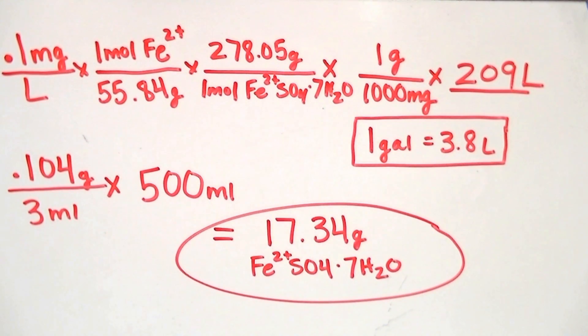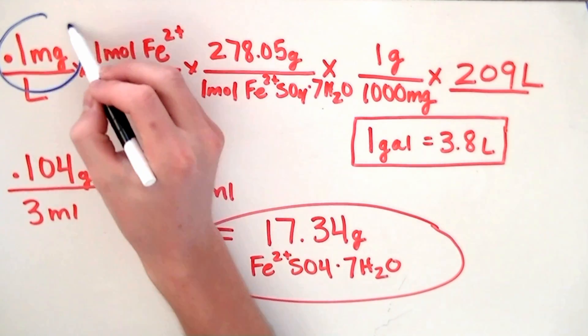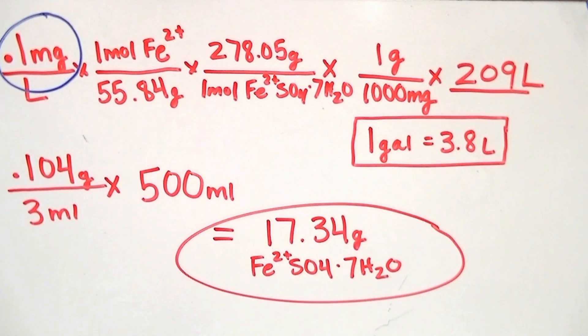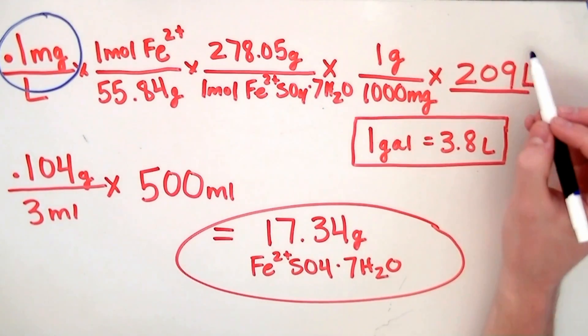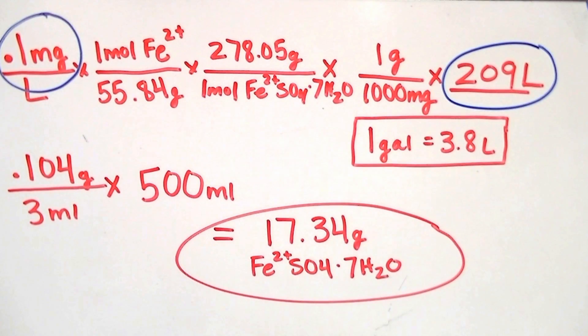Now let's go over some of the numbers in this calculation which we can change. The first number we can alter is the desired concentration. We recommend sticking with 0.1 mg per liter if you're using a sulfate-based fertilizer like we are. If you're using a different type of iron fertilizer, feel free to change this number, but stay within the Estimative Index. The next number that's subject to change is the volume of the aquarium you're dosing. To find out how many liters your aquarium is, simply take the volume in gallons and multiply it by 3.8.